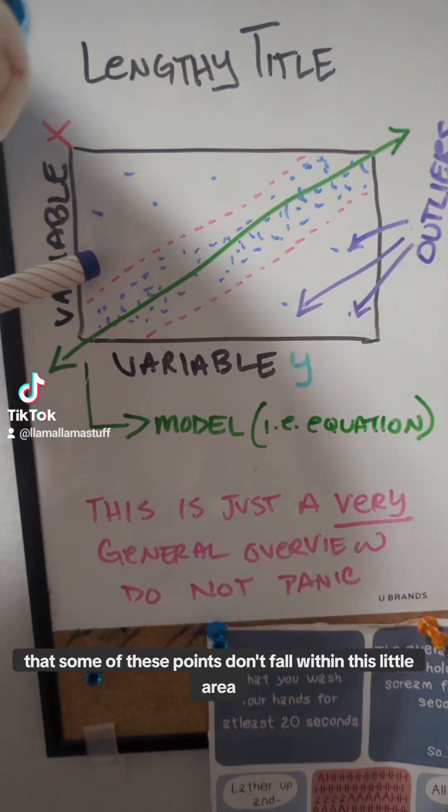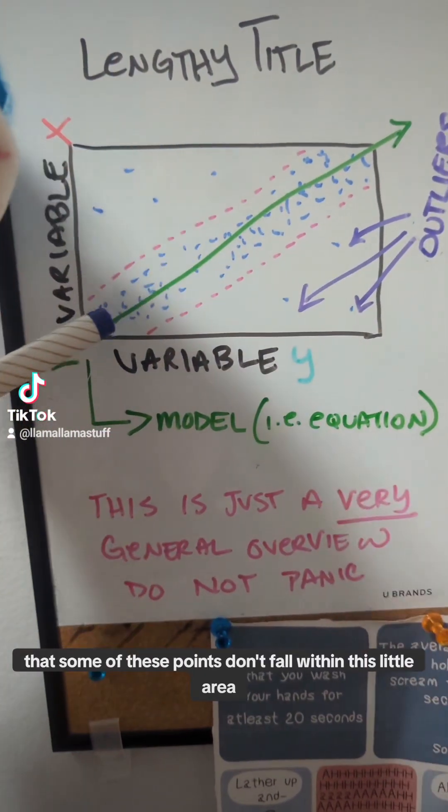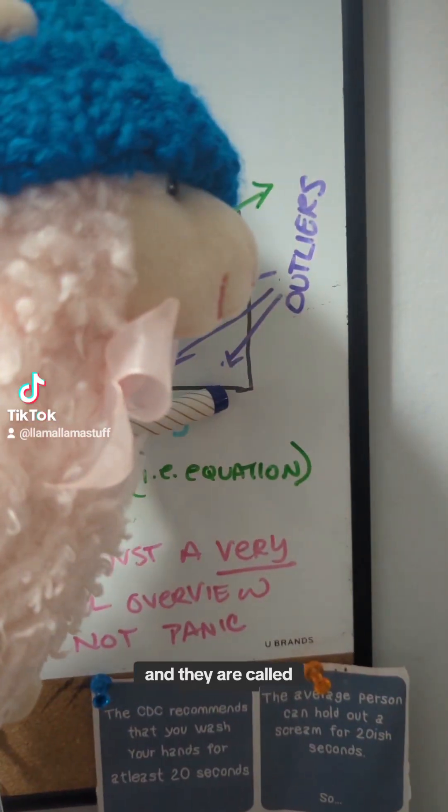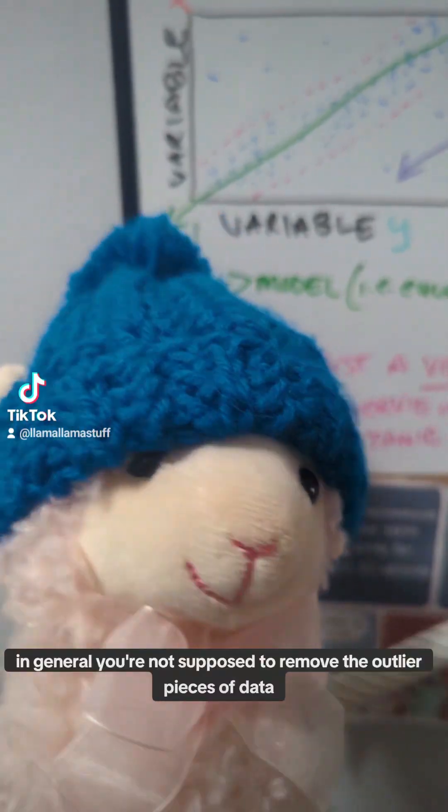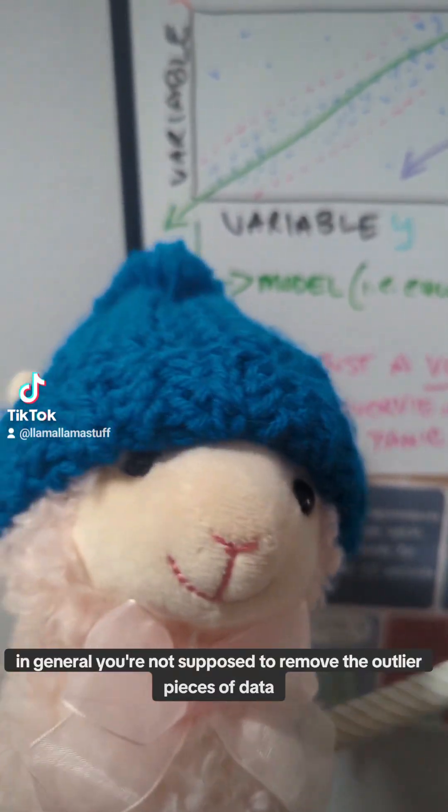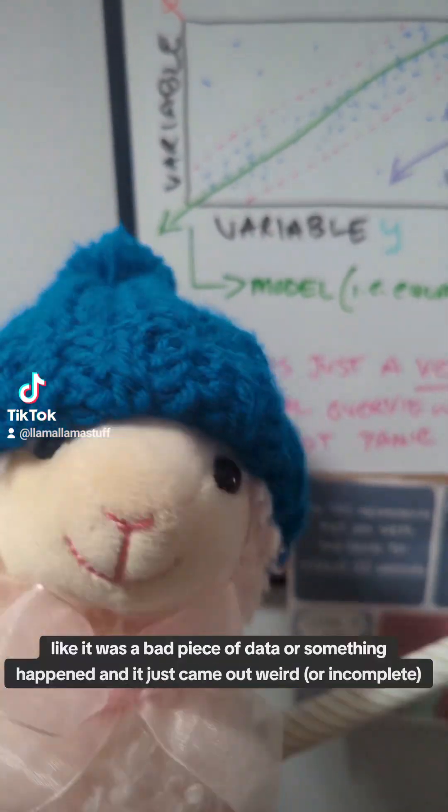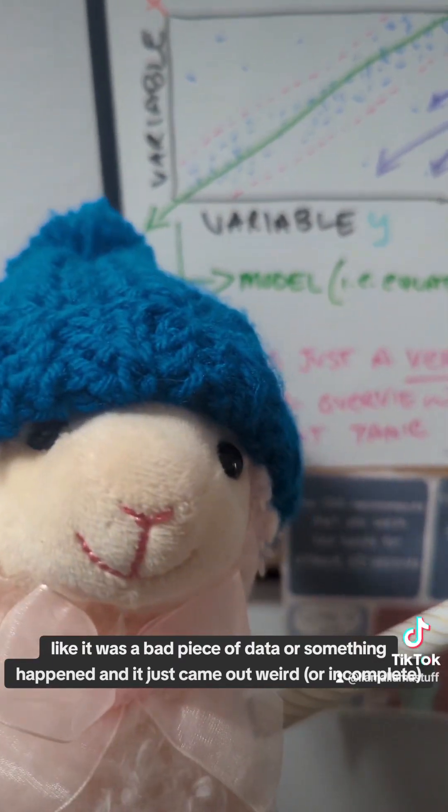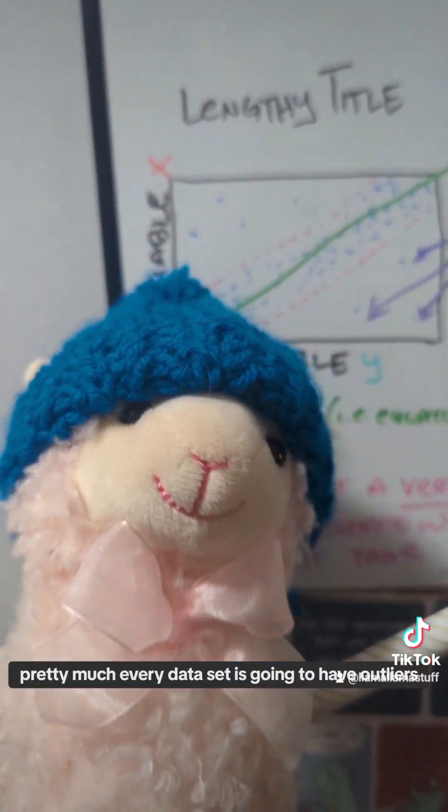Some of you may have noticed that some of these points don't fall within this little area or fall anywhere near the line, and they are called outliers. In general, you are not supposed to remove the outlier pieces of data, and if you do so you have to explain why, like it was a bad piece of data or something happened and it just came out weird. Pretty much every data set is going to have outliers.